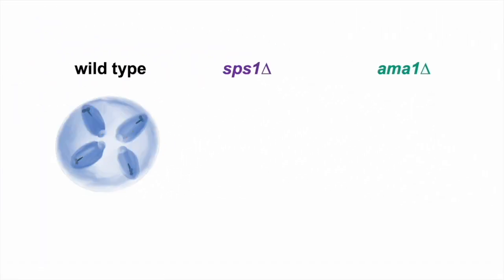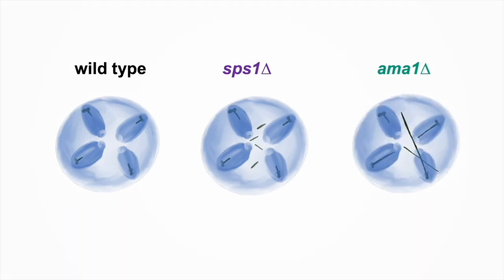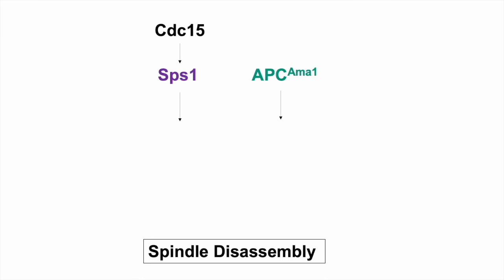We removed each of these proteins and examined the resulting spindle disassembly defects and found that each mutant had different problems, suggesting that each protein regulates a different aspect of spindle disassembly. This result led us to ask if each pathway acted on different targets.